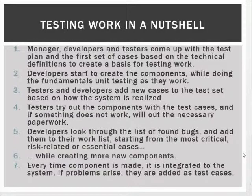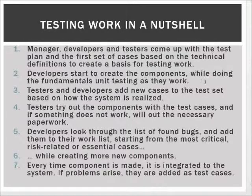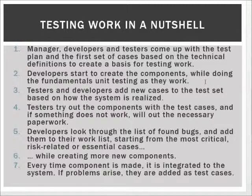Since we need some idea of what we are doing — what the software product will be doing, what platform it will run on, and what programming language will be used — we use this information to create our original set of test cases. The second step is that developers start creating new components and, while doing so, perform fundamental unit testing on those components, checking for missing syntax, doing code comprehension tests or code reviews, to ensure the code is reasonably bug-free and that coding conventions are followed.